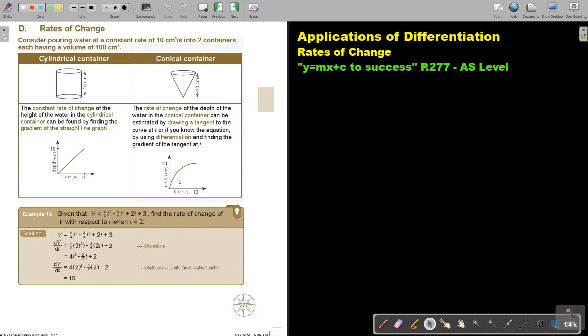So basically, this one is going to form a curve. That's why you cannot find the gradient of the whole curve. You can only find the gradient at a specific point, just like we did in the previous videos. So, let's look at an example.